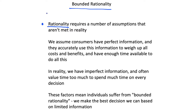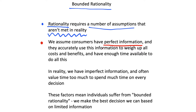However, this assumption that individuals are doing this requires a number of assumptions that we do not see in reality. There are lots of unrealistic assumptions required for a consumer to be choosing the best thing all of the time. One of the key assumptions we need for rationality is that consumers have perfect information — they know the costs and benefits of every single decision, and they need enough time to weigh all of this up.